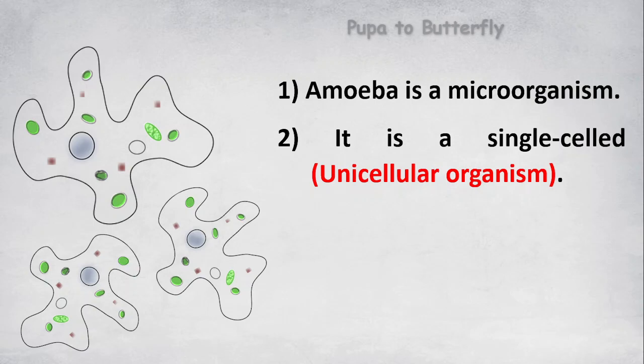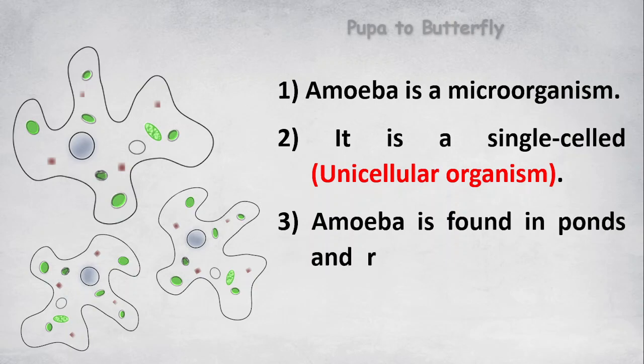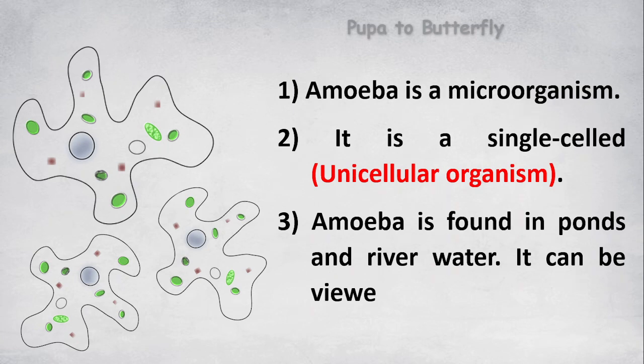It is a single-celled organism. Amoeba is found in ponds and river water. It can be viewed under a microscope.